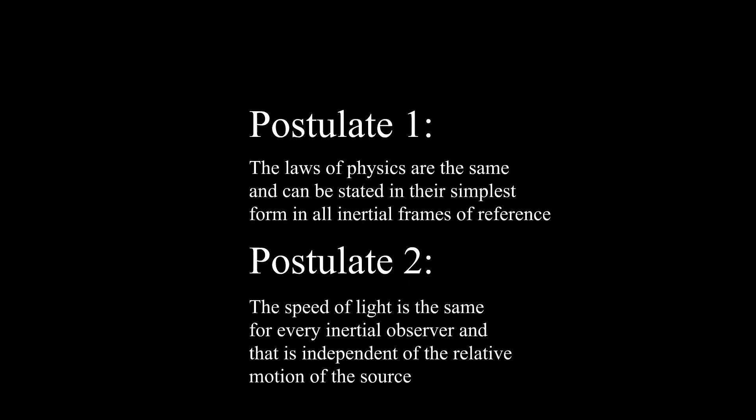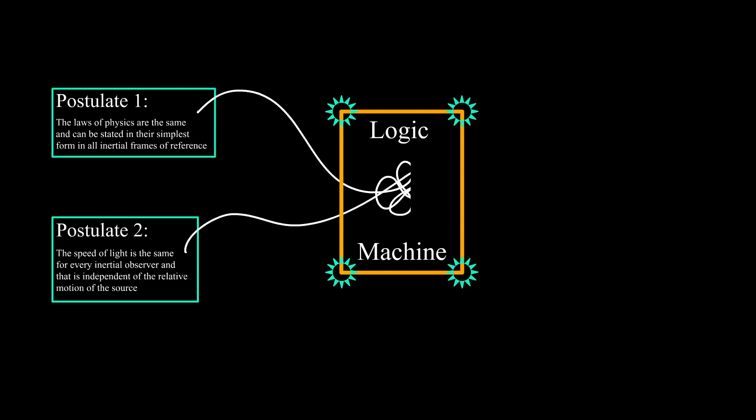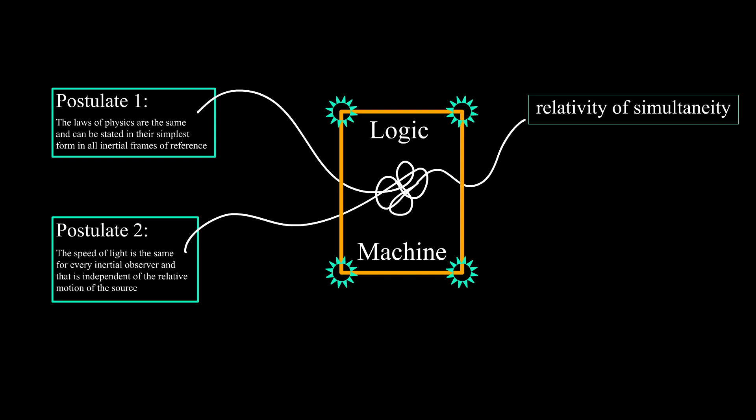Last time we properly defined an inertial frame, along with the two postulates of special relativity, so we are all on the same track when deriving more advanced phenomena. Today we are going to take these postulates, run them through a logic machine, and derive the first consequence called relativity of simultaneity. If you haven't watched the previous video, I strongly recommend you do so, because it's very important to keep track of the logic we are going to use.